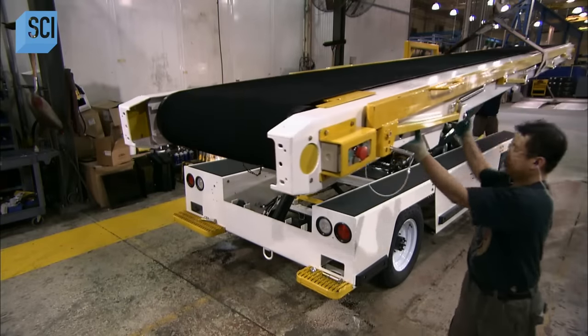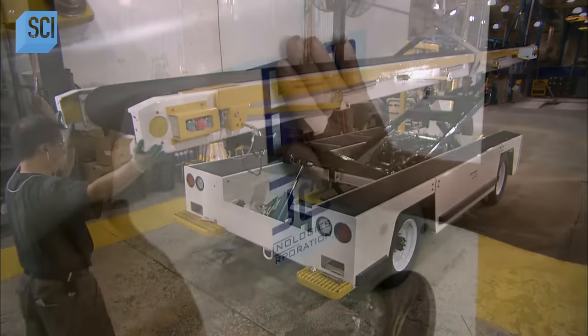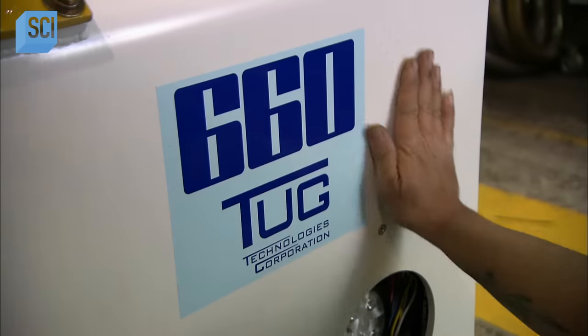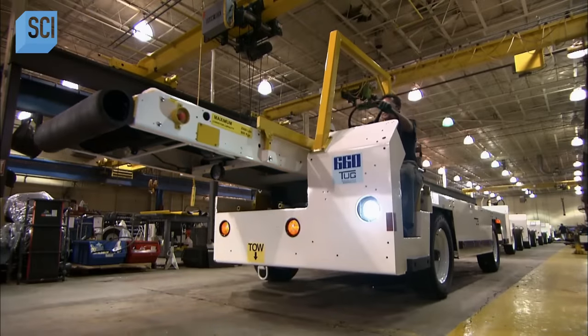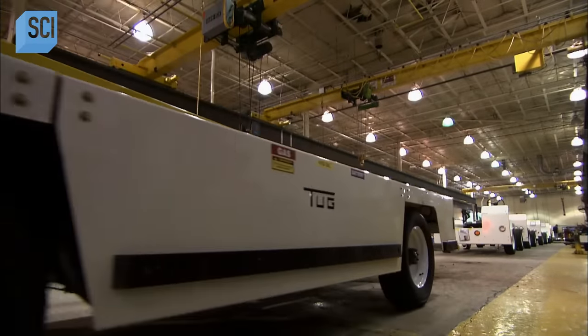Now workers hoist the conveyor over the vehicle, and bolt the front and rear lift arms to the cross member on the conveyor's underside. The two units are now one mobile belt loader, ready to roll off the line and hit the tarmac.